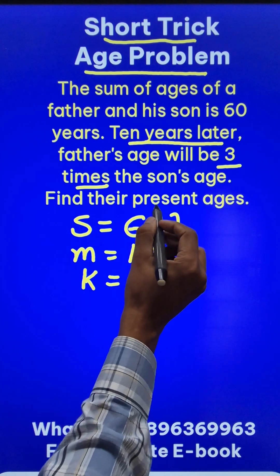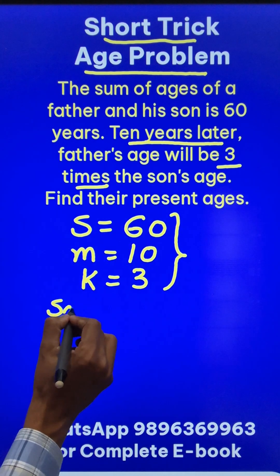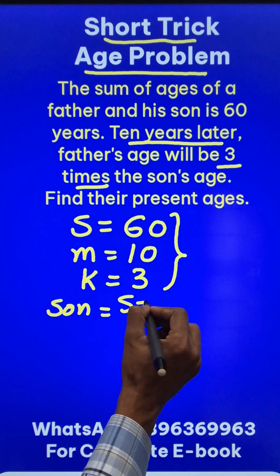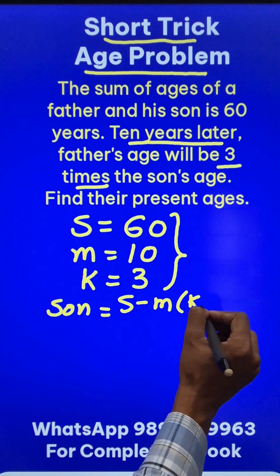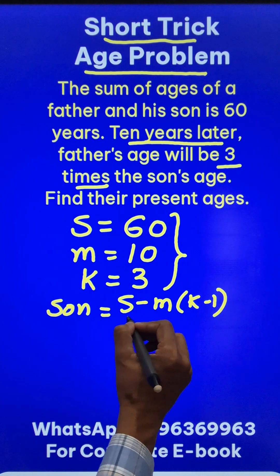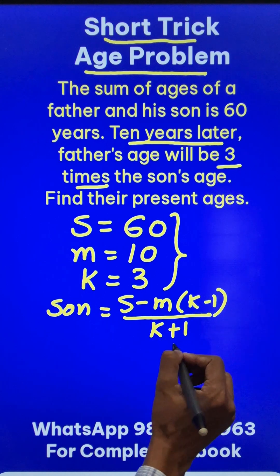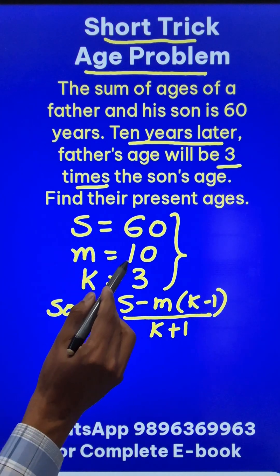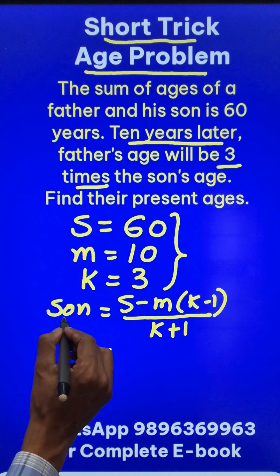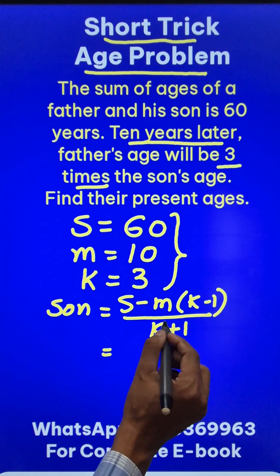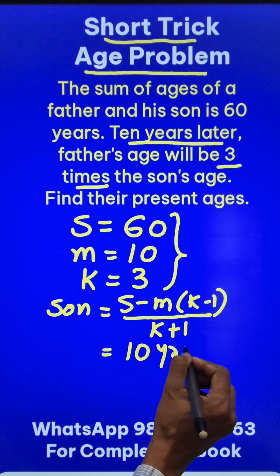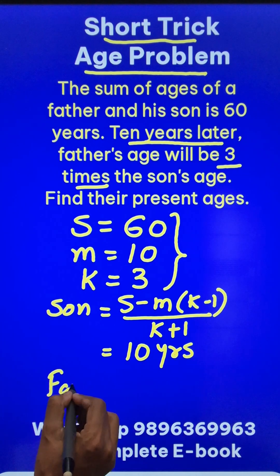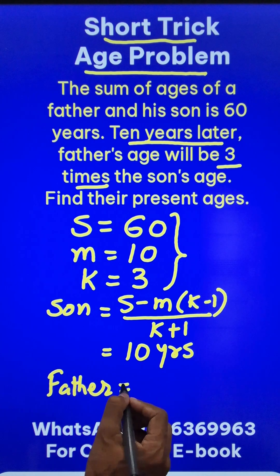Let's find the present age of the son first. The son's age will be: sum minus m times (k minus 1), upon (k plus 1). Now if you substitute the values of S, m, and k here, you will find that the son comes out to be 10 years old.